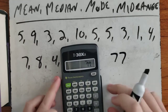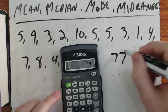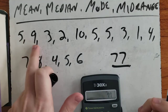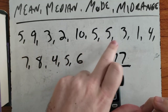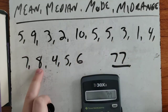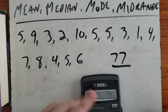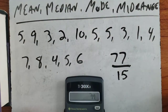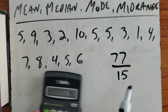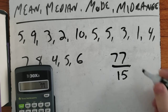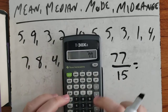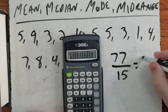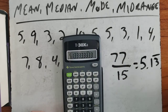Now we have to count how many numbers there are and divide. So our total divided by how many there are — counting up we have 15 numbers. So it's 77 divided by 15, and our answer is 5.13 repeating.